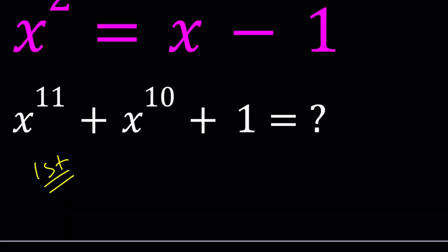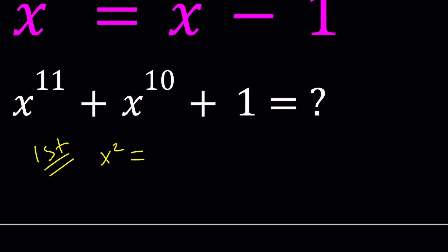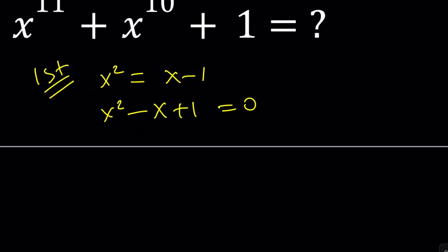For my first method, I would like to solve the quadratic. Put everything on the same side, and then you get x squared minus x plus 1 equals 0. If you solve this by completing the square or by using the quadratic formula, you're going to get x equals negative b plus minus the square root of b squared, which is 1 minus 4, which is negative 3. And that'll be root 3i. So you get the following values.